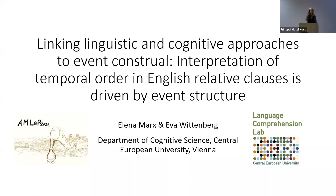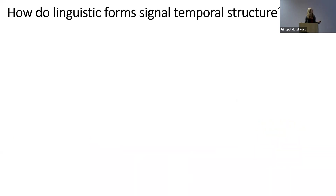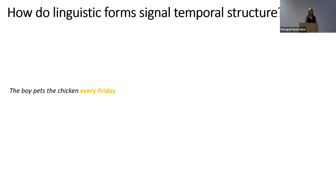Thank you for the introduction and thanks for having me. The question we were interested in is: how do we get from linguistic form to knowing when something happens? If I tell you the boy pets the chicken every Friday, you will check your calendar and infer the boy probably pets the chicken today, because languages have lexical means to convey this information, such as 'every Friday.'